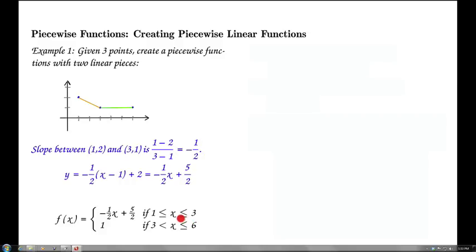So notice I have the equal sign for the 3 on the top piece, but not on the bottom piece, because we don't want to have 3 represented twice in our function. In this case, because the two lines connect at the point 3, 1, that equal sign could be on either piece.